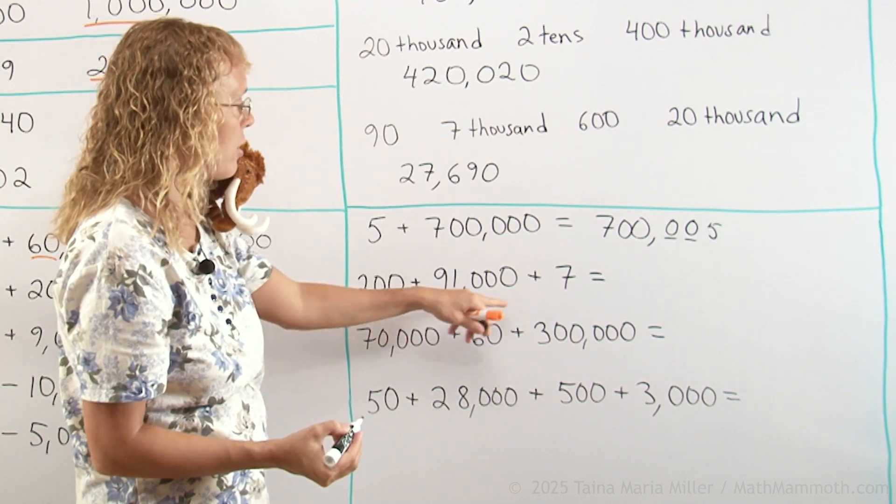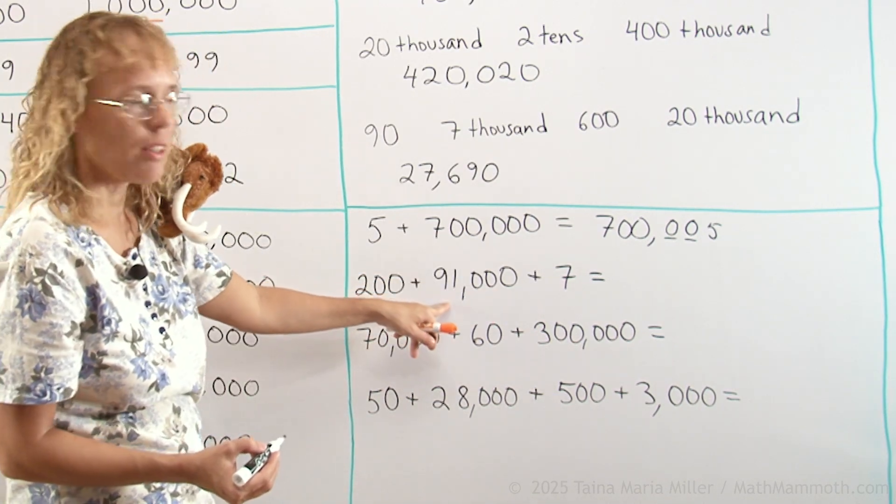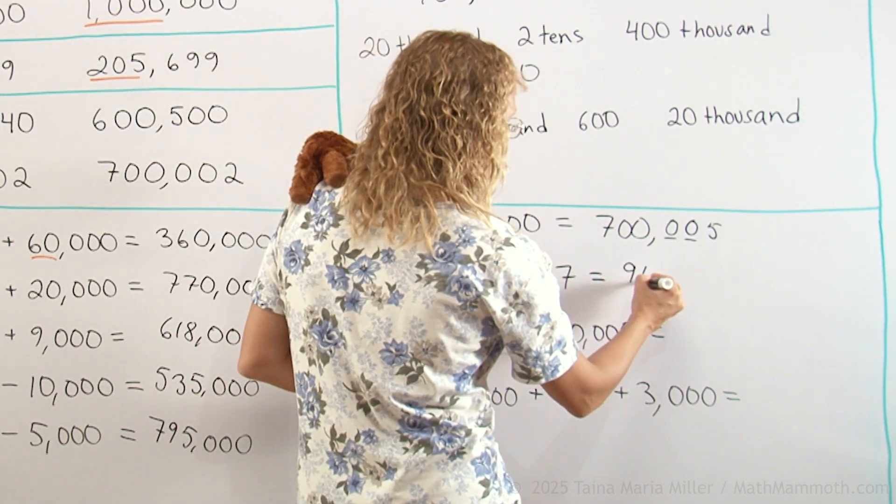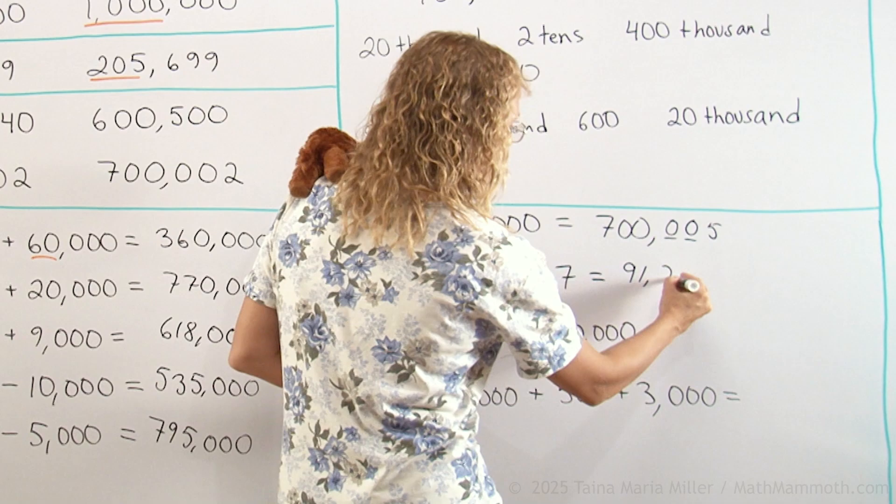Two-hundred plus ninety-one-thousand plus seven. I'll start writing with the ninety-one-thousand and then have two-hundred-seven. Ninety-one-thousand, two-hundred-seven. Like that.